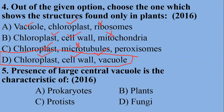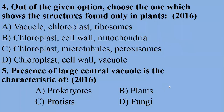Question 5 from UHS 2016 paper: presence of a large central vacuole is a characteristic of which group? It is obviously a feature of plant cells. There are no membrane-bounded structures in prokaryotes, and protists include protozoa and algae. The best answer in the given options is beta: plants.